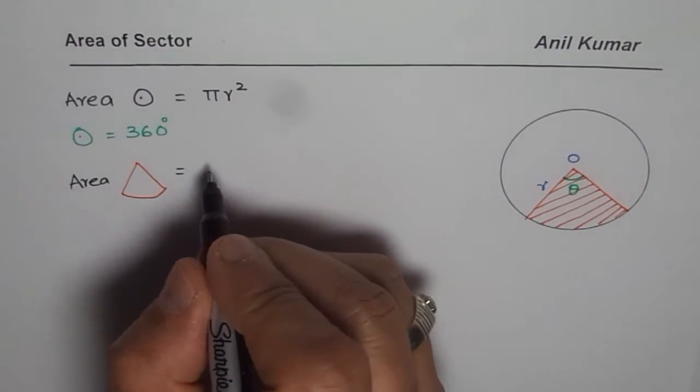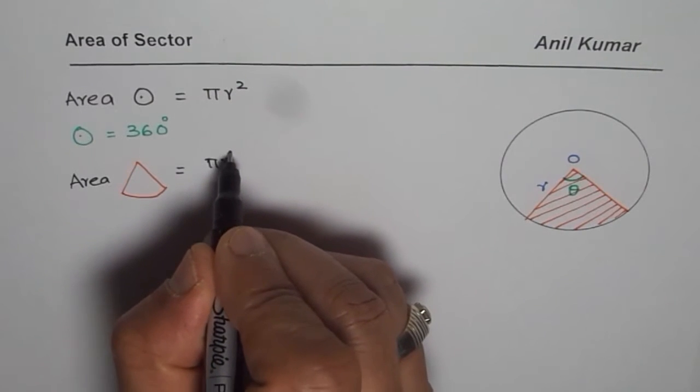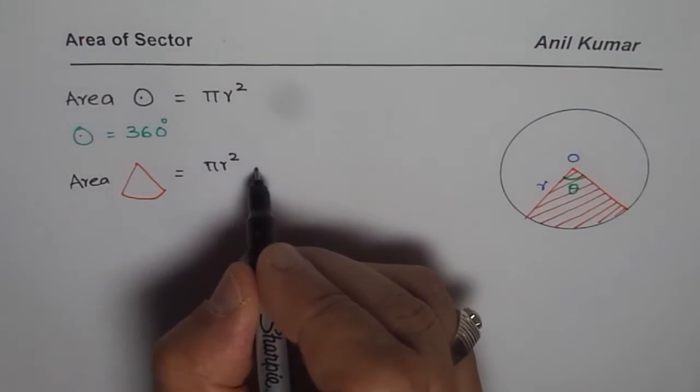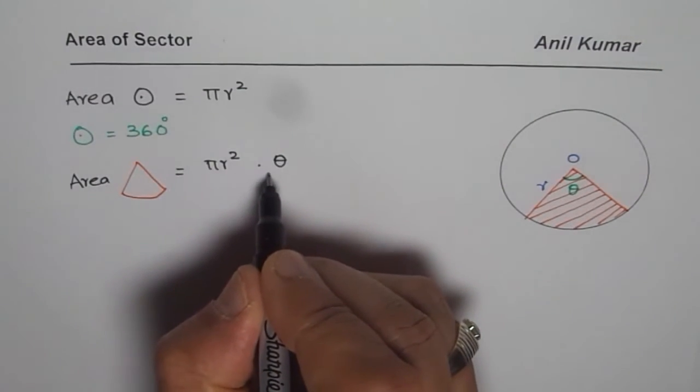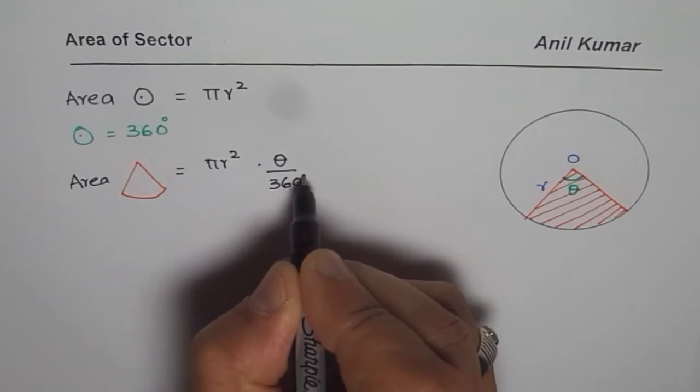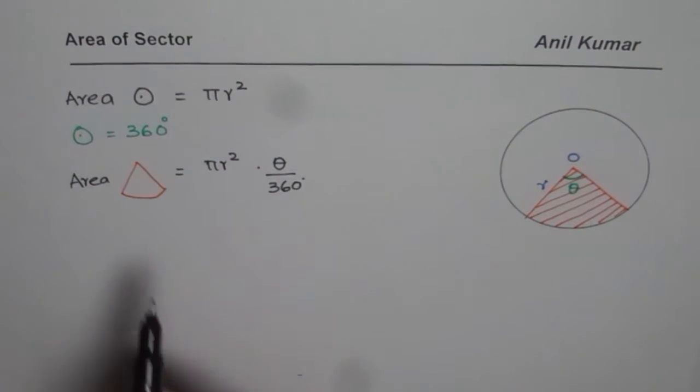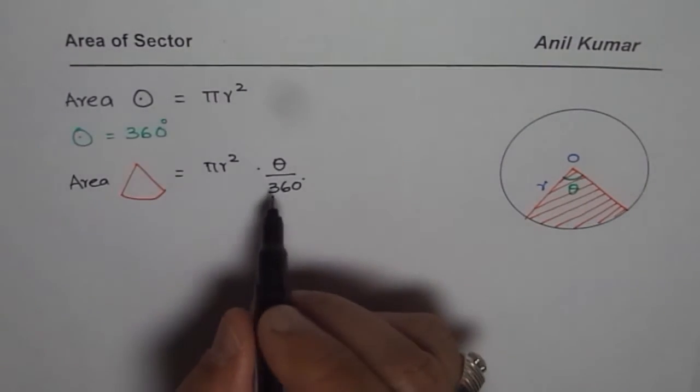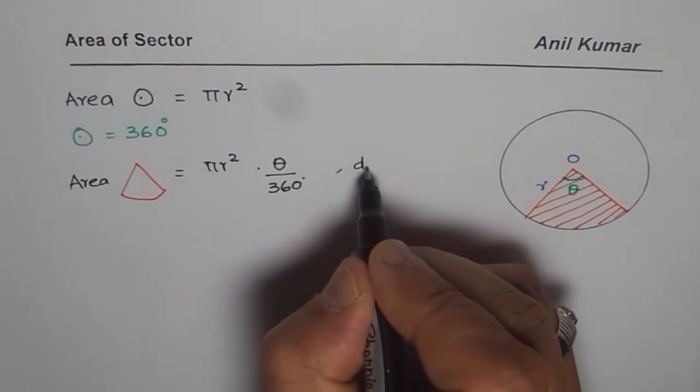It should be equal to πR² times the part which is enclosed within θ out of 360. So that particular ratio θ/360 degrees. That becomes the formula for area of this sector when angle is measured in degrees.